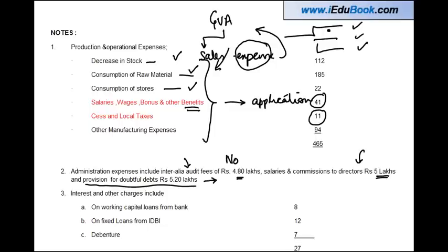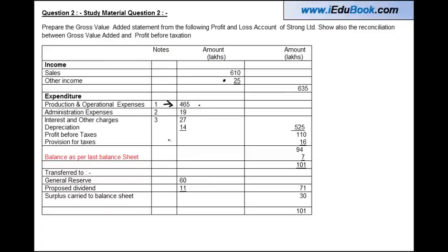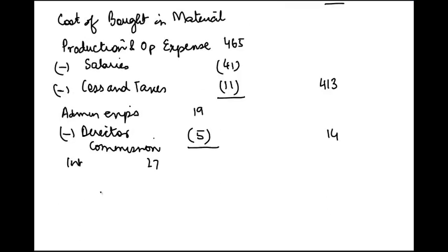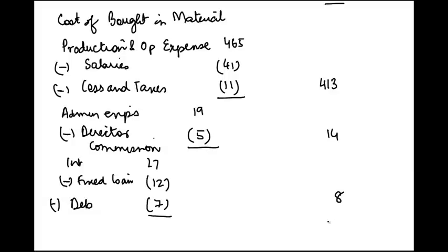In so far as interest is concerned, you are given details: working capital loan of 8, fixed loan, and debentures. Fixed loans are long-term loans; debentures are always considered long-term. When calculating the expense for cost of bought-in materials, we do not count the expense for long-term financial holders — which is 19 in this case. So from interest and other charges of 27, we reduce: minus fixed loan (12) minus debentures (7), that's 19, leaving 8.